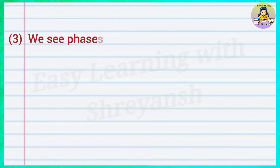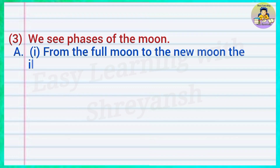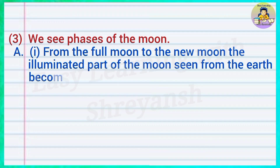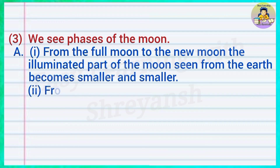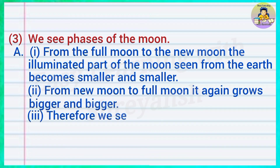Three — we see phases of the moon. Answer: From the full moon to the new moon, the illuminated part of the moon seen from the earth becomes smaller and smaller. From new moon to full moon it again grows bigger and bigger. Therefore we see phases of the moon.